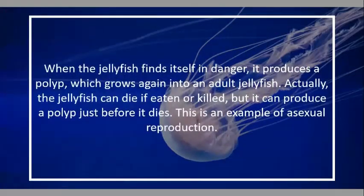When the jellyfish finds itself in danger, it produces a polyp which develops into another jellyfish. The jellyfish can die if it is eaten or killed, but it can produce a polyp just before it dies. This is an example of asexual reproduction.